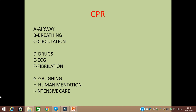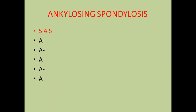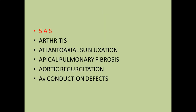Let's see the next mnemonic: ankylosing spondylitis. You have five A's to remember — arthritis, atlantoaxial subluxation, apical pulmonary fibrosis, aortic regurgitation, and atrioventricular conduction defect. Revision: arthritis, atlantoaxial subluxation, apical pulmonary fibrosis, aortic regurgitation, and atrioventricular conduction defect.